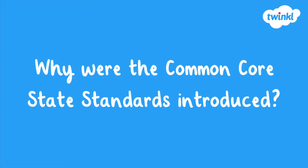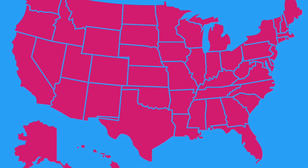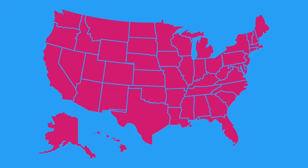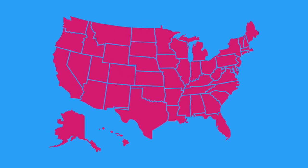Why were the Common Core State Standards introduced? Before Common Core was introduced, each state in the United States had its own set of standards for what students should be able to do in each subject at each grade level. Given that each state had its own set of standards, it made it incredibly difficult for the United States to compare students academically between states, and it was difficult to try to improve the level of education on a national level.